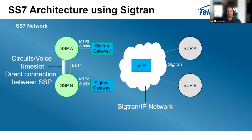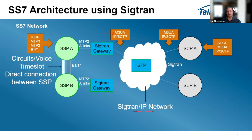If you look at the SS7 architecture using SIGTRAN, you have traditional SS7 endpoints or nodes or SSPs with traditional MTP2 links. What you want to do is move onto an IP network. You use a SIGTRAN gateway, which connects via M3UA over IP — usually private clouds — carrying SIGTRAN traffic.